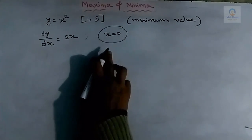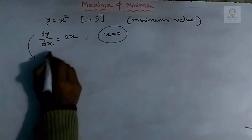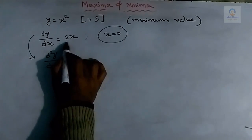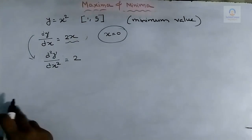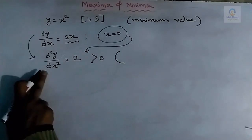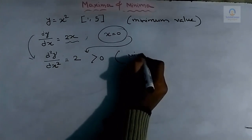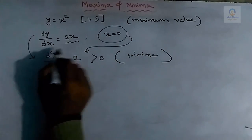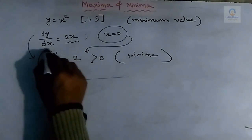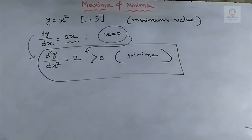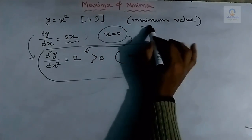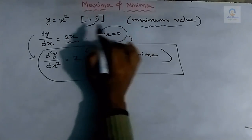We have got one critical point, x = 0. The second step is to calculate the second differentiation, d²y/dx². The second differentiation of y = x² is 2. As there is no x term here, we need not put the value of the critical point — this is already greater than zero. So for every critical point this function will give a point of minima, because d²y/dx² > 0. Putting x = 0 gives y = 0.